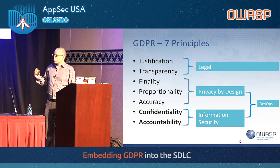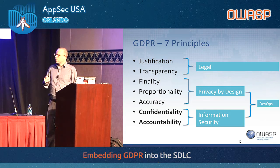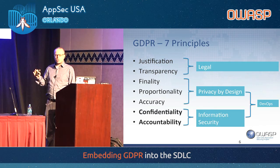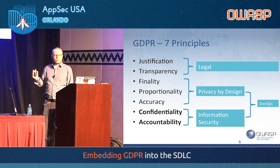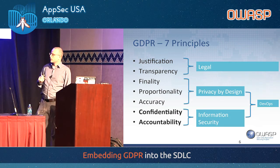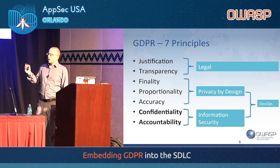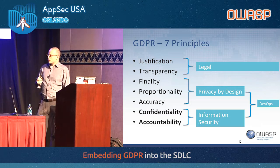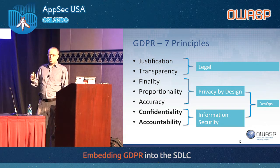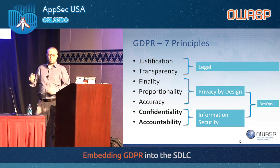When we look at the actual legislation — not going too deep — there are seven principles we could talk about for a whole day. Of those seven, we try to say which things your legal team will take care of and which things the IT department should be interested in, because there are things they need to do to be compliant. Justification and transparency — meaning you need to tell people what you're using their data for — is something the legal team will primarily handle. The proportionality principle clearly states that when you keep data from people, you can keep only as much data as is needed to achieve the goal that the application is meant to do.